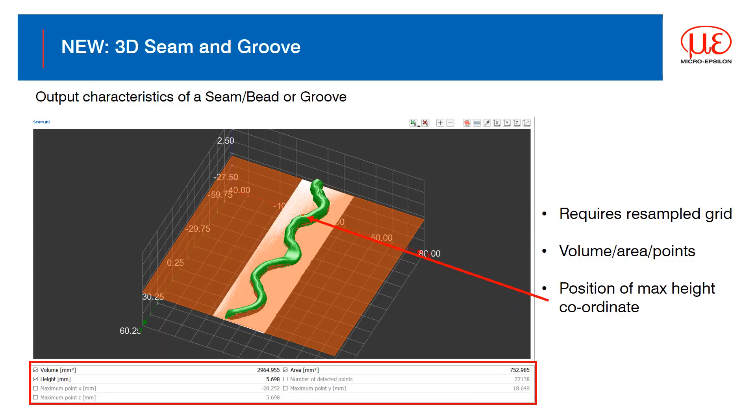A new evaluation tool released in version 1.5 of 3D inspect is that for welds or seams. The tool evaluates all points above a plane, giving volume, area and the number of points detected as values for use in the final evaluation. It also indicates the position of the highest point on the bead.